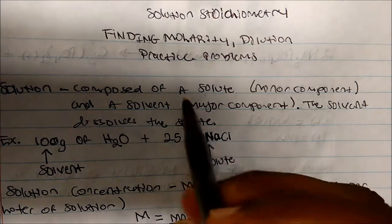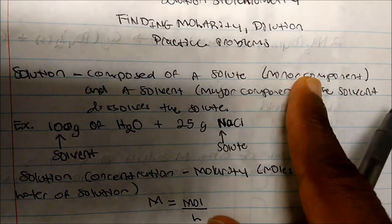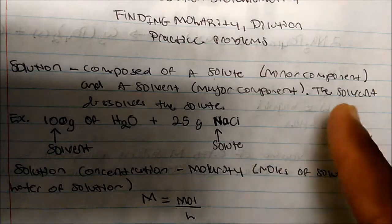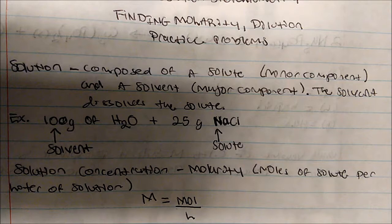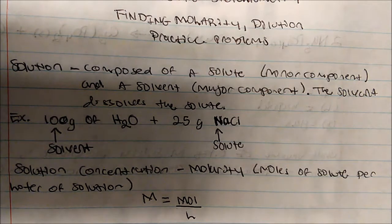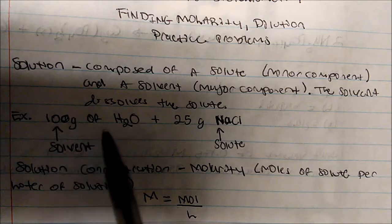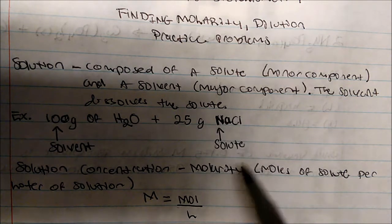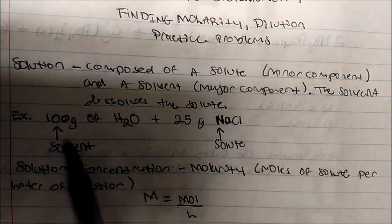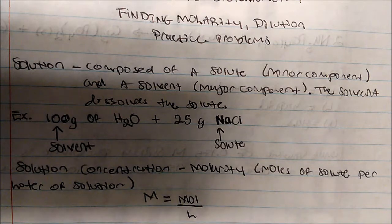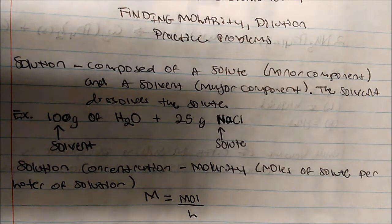So, what is a solution? A solution is composed of a solute, which is a minor component, and a solvent, which is a major component. The solvent actually dissolves the solute — in other words, the solute is dissolved in the solvent. The bigger number is always your solvent. For example, if we have 100 grams of H₂O and 25 grams of sodium chloride, the sodium chloride is your solute, and it's dissolved in 100 grams of water, which is your solvent.